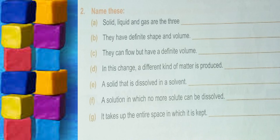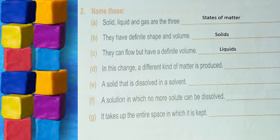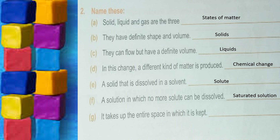Exercise 2 — Name these: (a) Solid, liquid, and gas are the three states of matter. (b) They have definite shape and volume — Solids. (c) They can flow but have a definite volume — Liquids. (d) In this change a different kind of matter is produced — Chemical change. (e) A solid that is dissolved in a solvent — Solute. (f) A solution in which no more solute can be dissolved — Saturated solution. (g) It takes up the entire space in which it is kept — Gas.